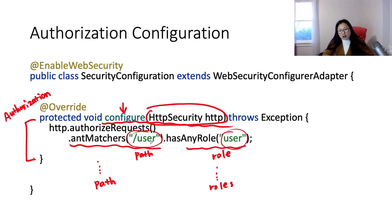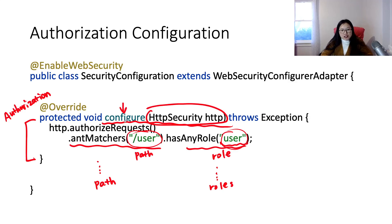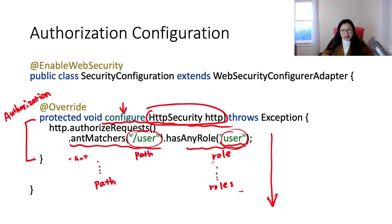If the logged-in user does not have the USER role, Spring Security will throw an exception — the user is not authorized to access the '/user' page. Basically, in this authorization configure method, you define many paths, each requiring certain roles. One important suggestion: the order of the matchers matters — you should order them from the most restrictive to the least restrictive.